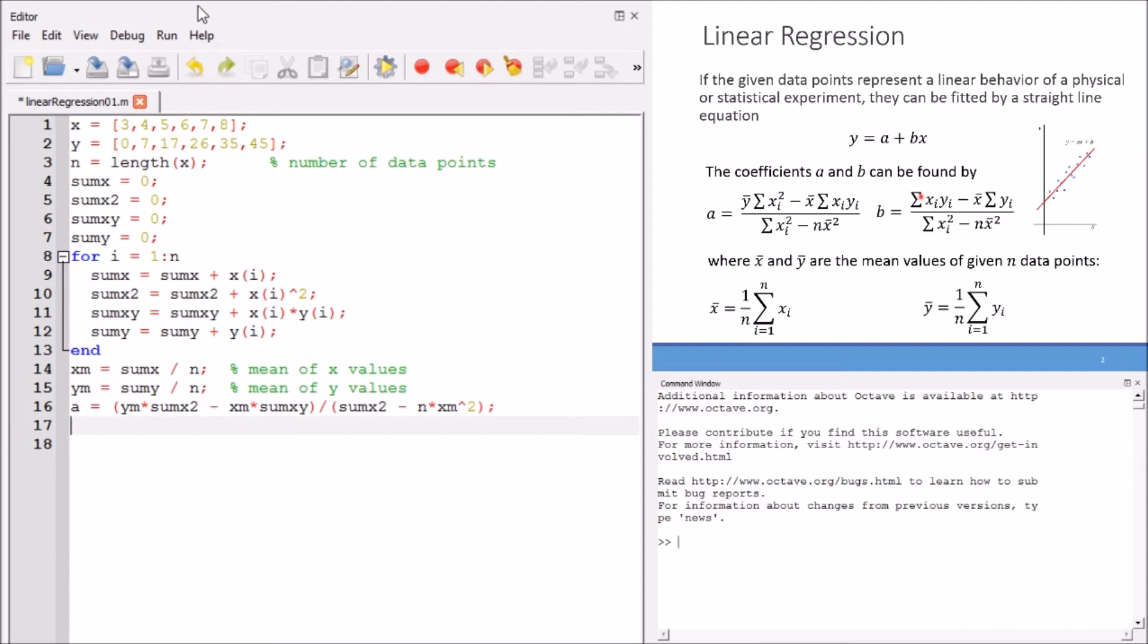Finally, we type the equation exactly for a. We have y mean multiplied by sum x squared minus x mean multiplied by the sum of xi yi, over the summation of x squared minus n multiplied by the square of the mean values. We get the same equation for b. We have sum xi yi minus x mean multiplied by the sum of y terms, over the summation of xi squared terms minus n multiplied by the mean values of x.